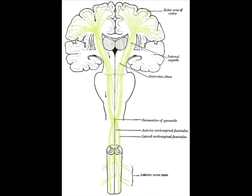The inferior half of the anterior limb is supplied via the recurrent artery of Heubner, which is a branch of the anterior cerebral artery. The inferior half of the posterior limb is supplied by the anterior choroidal artery, which is a branch of the internal carotid artery.